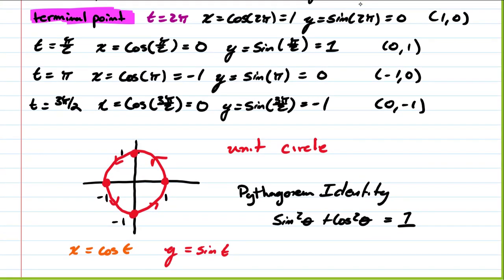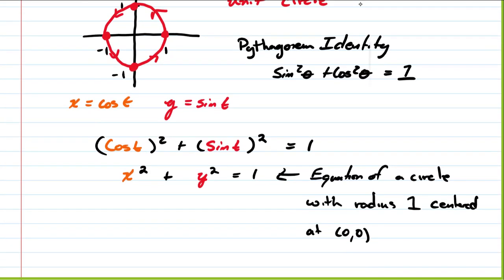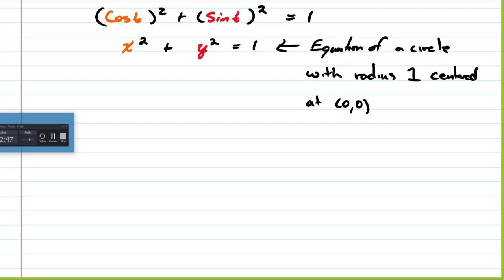Observations: when we sketched the circle from t equals 0 to 2π, we went around the unit circle once, in the counterclockwise direction.